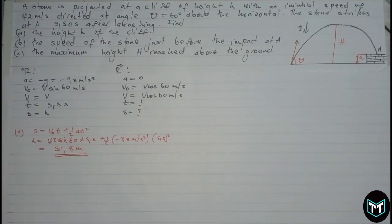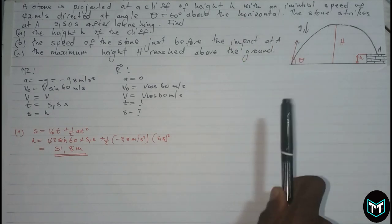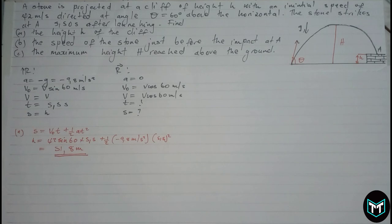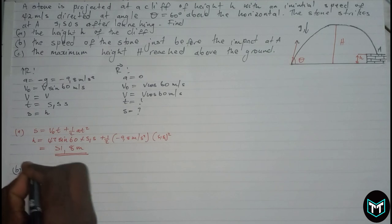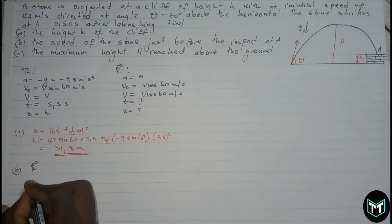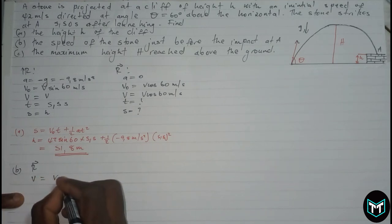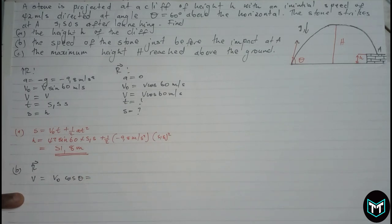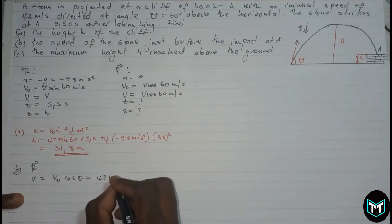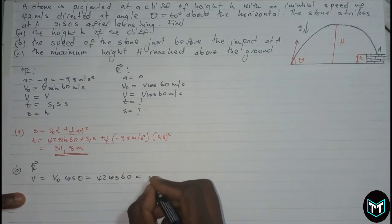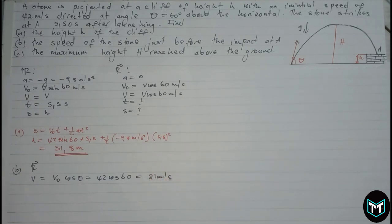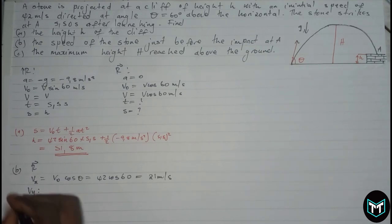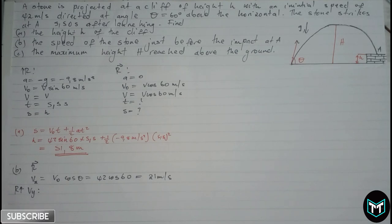Now moving to Part B: the speed of the stone just before impact. Since we're dealing with direction, we find the speed in the vertical direction and the speed in the horizontal direction, then find the magnitude. The horizontal speed is constant since acceleration is zero, so vx equals v-naught cos theta equals 42 cos 60, which gives us 21 meters per second.